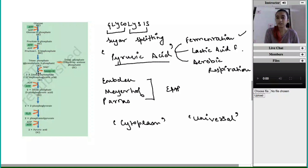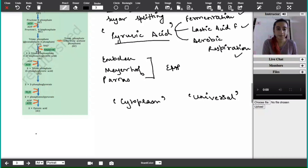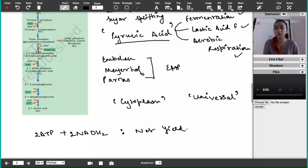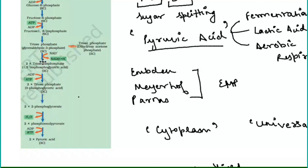The fate of pyruvic acid can be different — it could undergo different pathways — but glycolysis itself always produces the same result. The net yield from this reaction is two molecules of ATP and two molecules of NADH₂. That is the net yield for glycolysis.